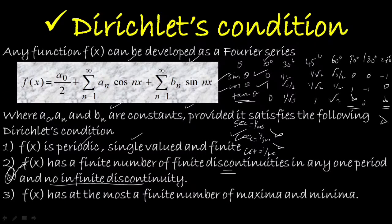The third Dirichlet condition is that f(x) must have at most a finite number of maxima and minima. If any function satisfies all three of these conditions, then it can be expressed as a Fourier series.